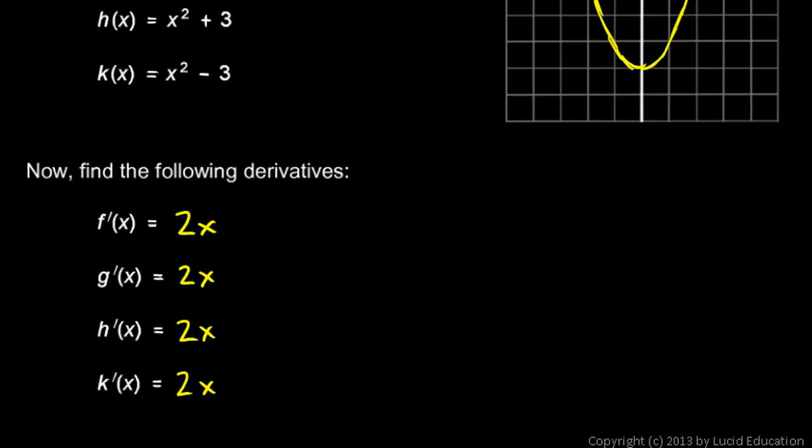That makes sense, because at any x value, any of those parabolas have the same slope. They're just shifted up or down, but they have the exact same curve characteristics for any given x value. So here's the question: